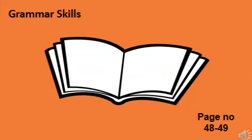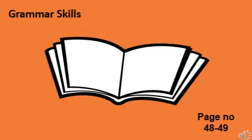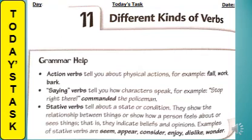Dear students, open your Grammar Skills book page number 48. First of all, you have to write day, date, and today's task: Different Kinds of Verbs. Number one: Action Verbs. Action verbs tell you about physical actions — for example, fall, work, bark. These all are action verbs.